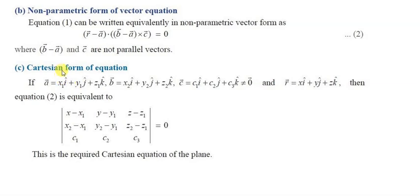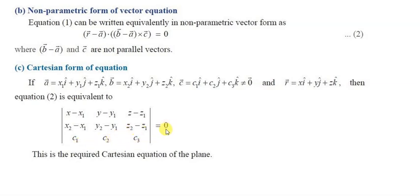For the Cartesian form of the equation through two points and parallel to a vector, the determinant is: (x minus x1), (x2 minus x1), c1 in the first column; (y minus y1), (y2 minus y1), c2 in the second column; (z minus z1), (z2 minus z1), c3 in the third column, equal to zero.